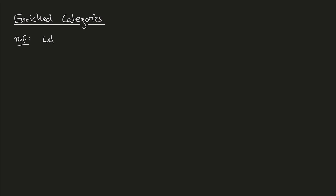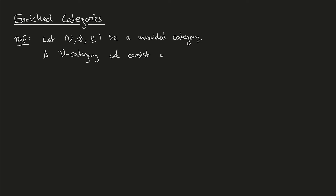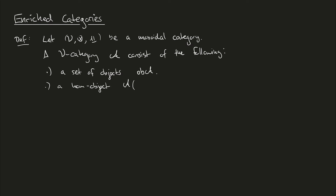Let's begin by fixing a monoidal category V. We let (V, ⊗, I) be a monoidal category. A V-category, which I'll denote A, consists of the following. First, we want a set of objects, which we denote ob(A). Then we want a hom object, which we denote A(A, B). This is an element of the objects of our monoidal category V, and we want this for each pair of objects A and B.